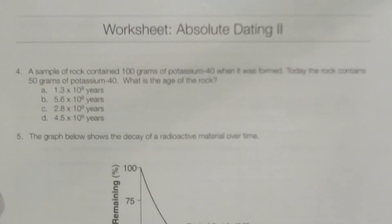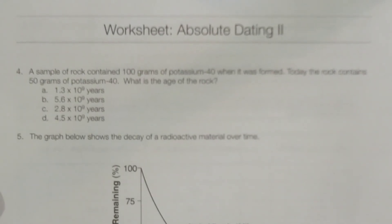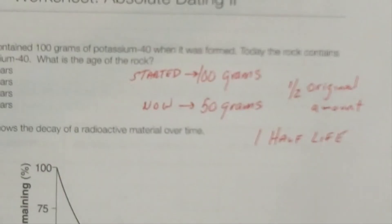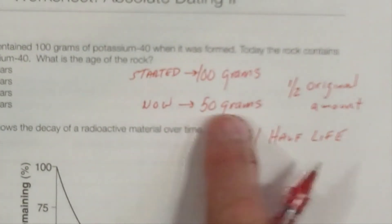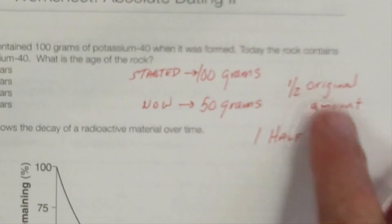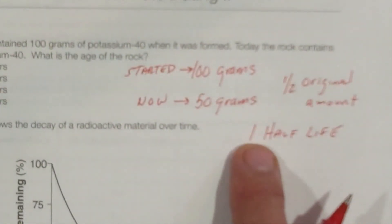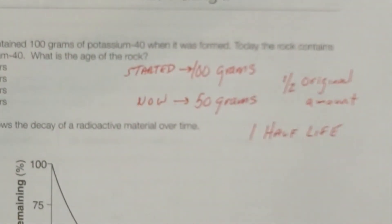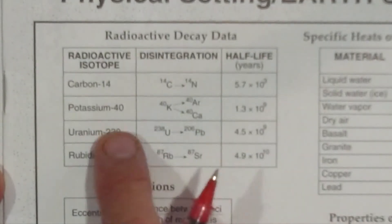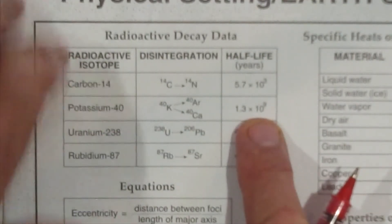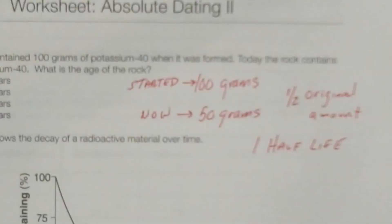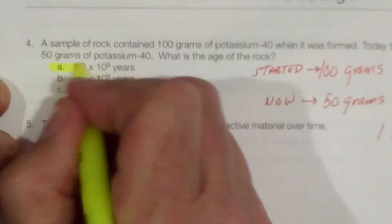Number four: a sample of rock contained 100 grams of potassium-40 when it was formed. Today, the rock contains 50 grams of potassium-40. What is the age of the rock? We started with 100 grams and now have 50 grams, which is half the original amount, meaning one half-life has gone by. The reference table states that one half-life for potassium-40 is 1.3 × 10⁹ years. Since we've gone through one half-life, letter A would be the appropriate answer.